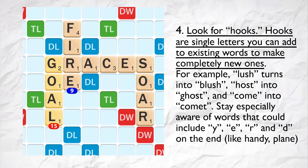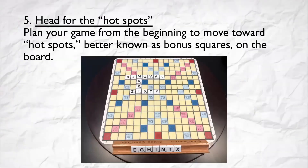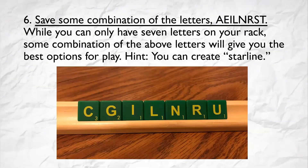Stay especially aware of words that could include Y, E, R, and D on the end — like 'handy' and 'plain.' Trick 5: Head for the hot spots. Plan your game from the beginning to move toward hot spots, better known as bonus squares, on the board. Trick 6: Save some combination of letters. While you can only have 7 letters on your rack, some combination of letters will give you the best option for play.